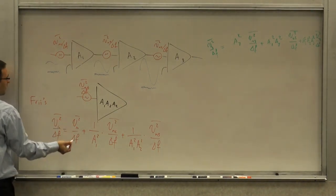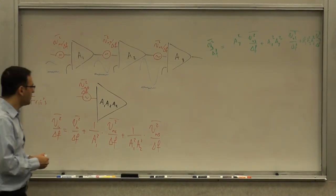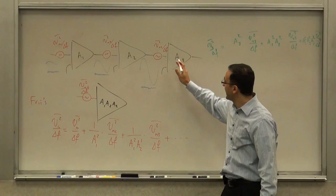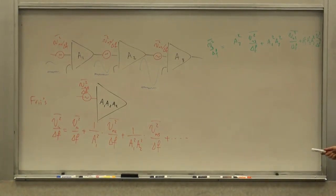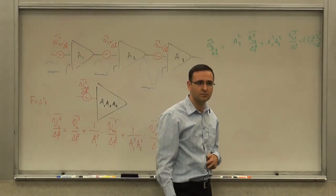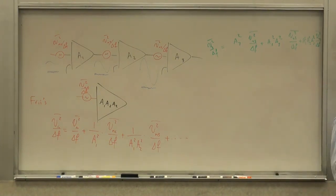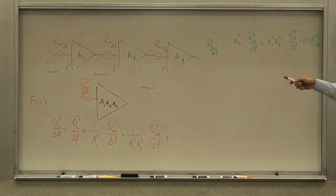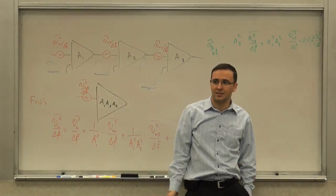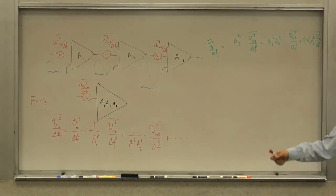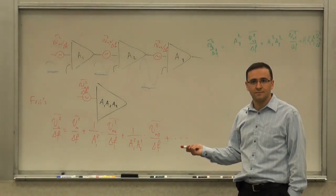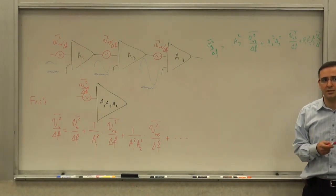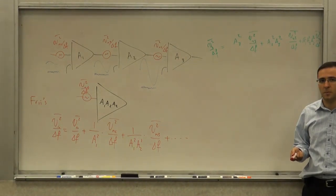This is called Friis's formula — named after the person who derived it — and in general for higher-order cascades, the same principle holds: noises of subsequent stages are reduced by the gain preceding them. This tells you that when designing a cascade, you really want to focus your energy on minimizing the noise of the first stage. That's why you start with a low noise amplifier. Nobody even worries about the noise of the last baseband stage in a receiver, because it's preceded by large gain and therefore attenuated. Any questions? This concludes our discussion of noise.